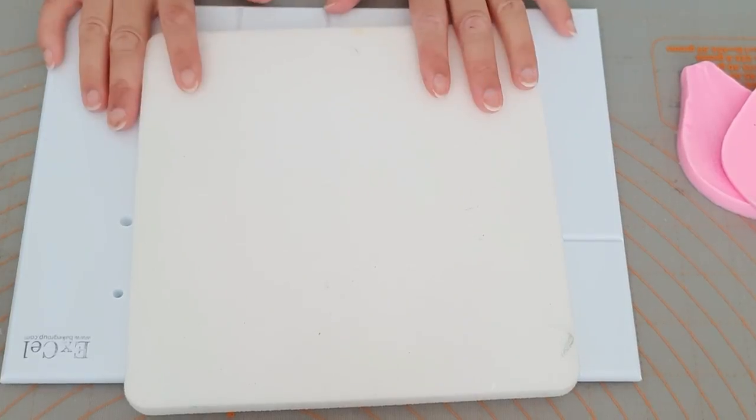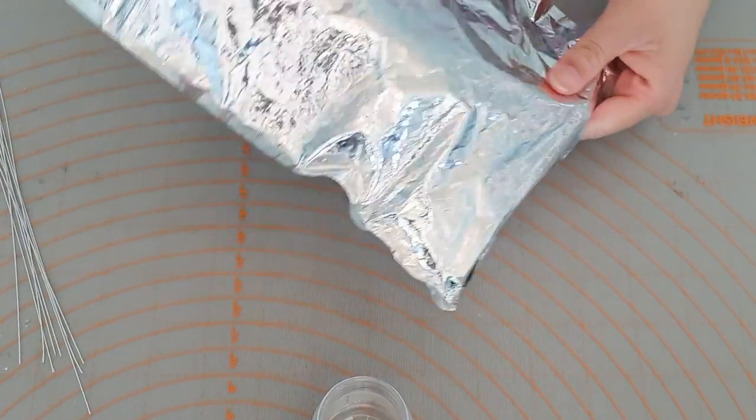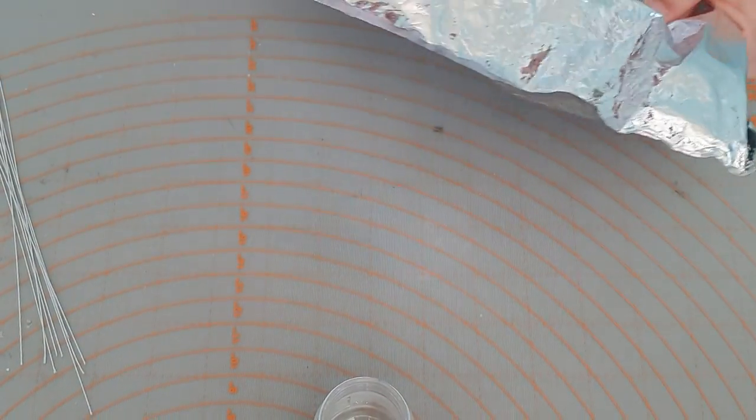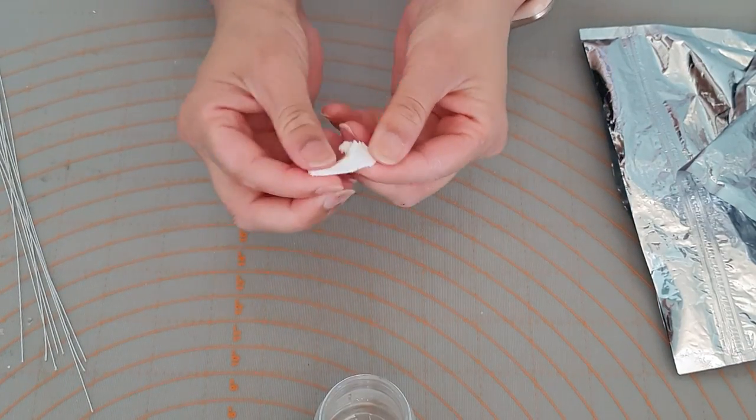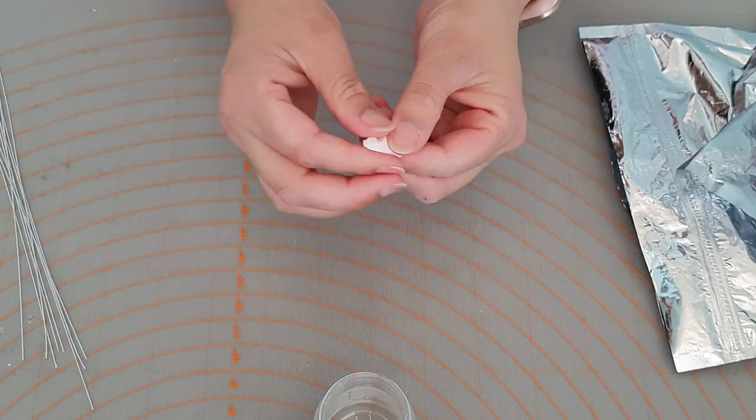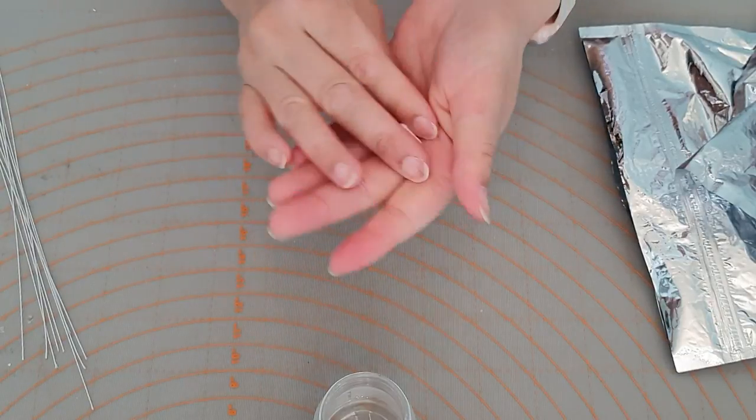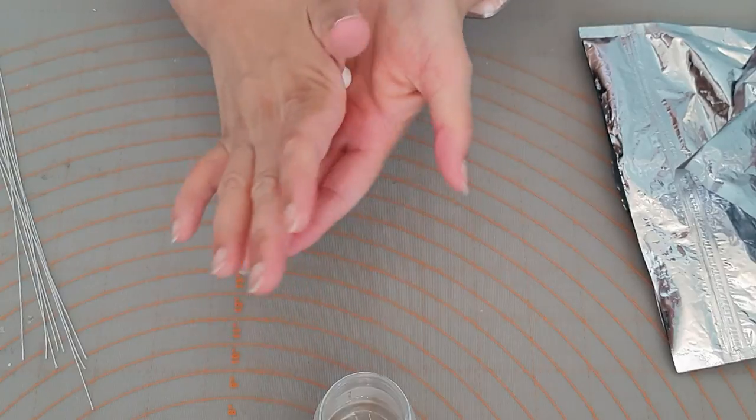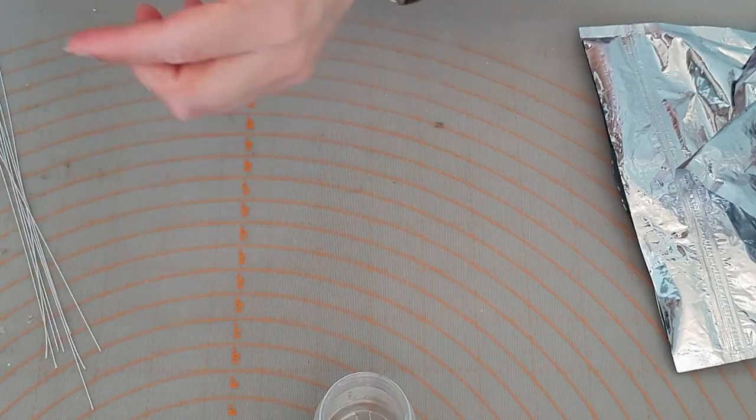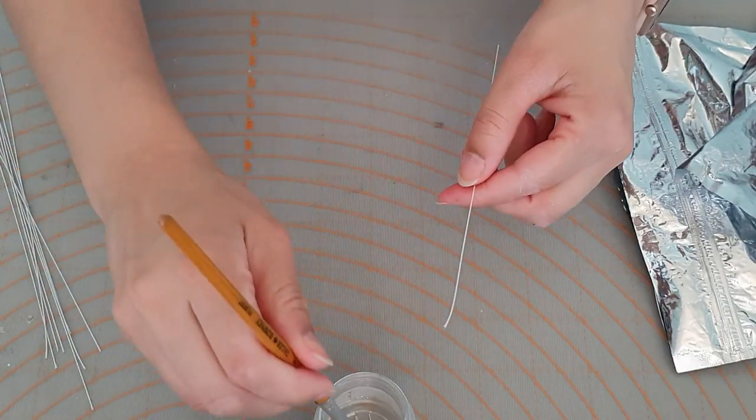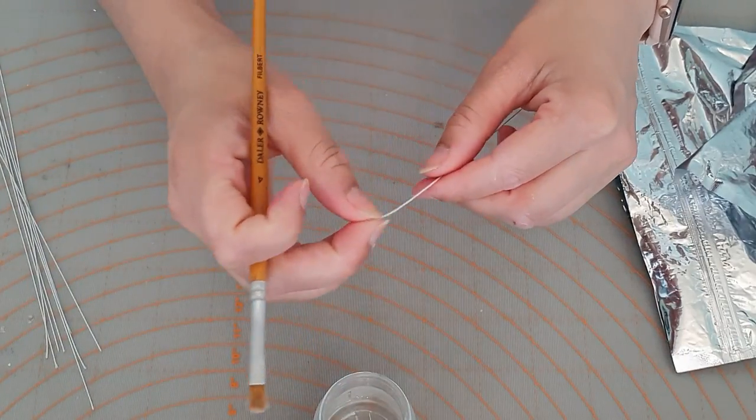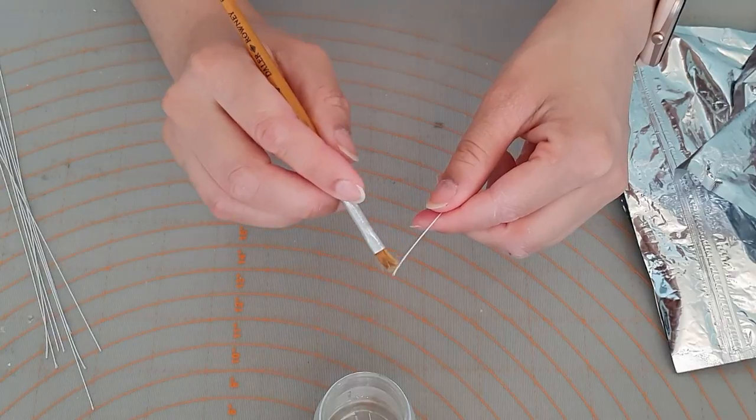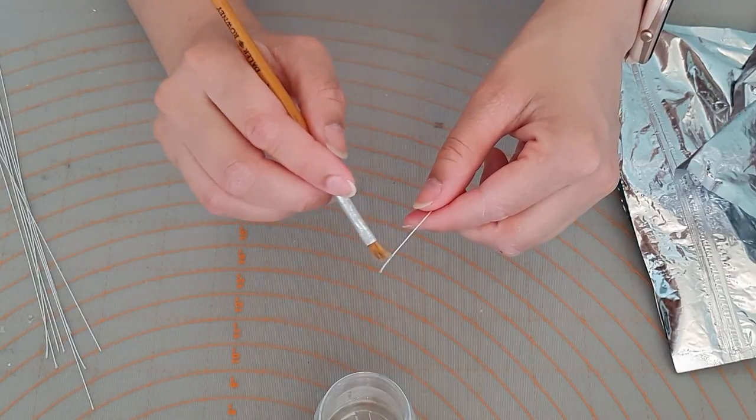And it's now time to work on the center bits. So for the middle center, we need some gum paste. And you just need around the size of a pea. And you're just going to roll it into a ball. And we're just going to coat the wire tip in sugar glue, just a little bit below the end, only a tiny bit.